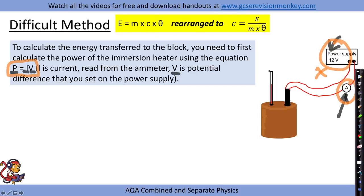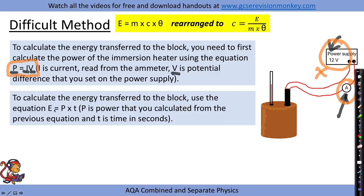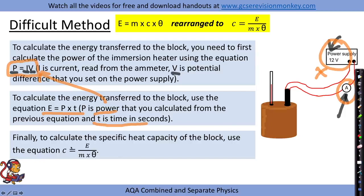Next we use a different equation to calculate energy transferred: E equals P times t, where P is calculated from the equation above and t is the time in seconds that the immersion heater was heating the metal block. The final step is to put these values back into the main equation: specific heat capacity equals energy (calculated from the two equations) divided by mass times temperature change.